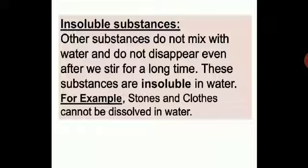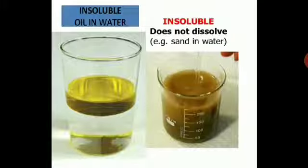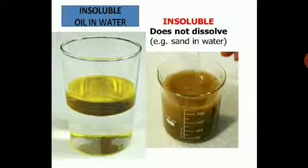For instance, if you try to dissolve solder in water, it will not dissolve even if you stir it for a longer period of time — the particles will still be seen. Such substances are called insoluble substances. Here you can see pictures of insoluble substances: oil in water will not dissolve and will form layers. Sand in water is also insoluble — you can see the particles of sand in water, and even after stirring, sand will not dissolve.